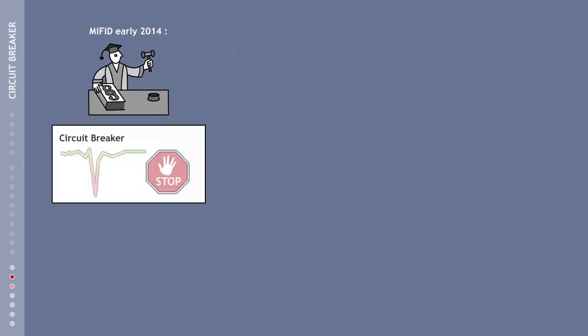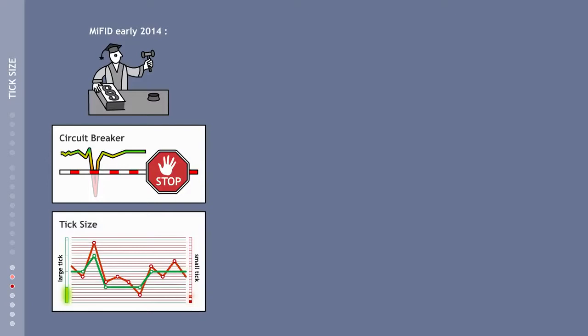The introduction of automated trading stops: if flash crashes occur, trading will be interrupted briefly. Flash crashes cannot be prevented like this, but the damages can at least be limited. The increase of the so-called tick size. This is the minimum amount by which a market price can change. This represents an indirect regulation of high-frequency trading, as price changes would occur less frequently.